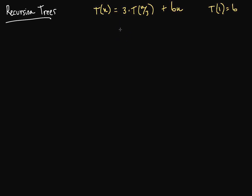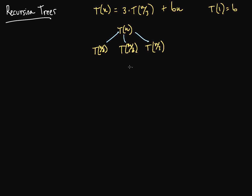Well, we start from the top — T of N. What we're going to do is create a tree structure with each of these recursions as the child nodes. So for this first one, its child nodes will be T of N over 3, and we need three of them: T of N over 3, T of N over 3, and T of N over 3, because we have three of them. And we continually do that — this is the recursion going on here.